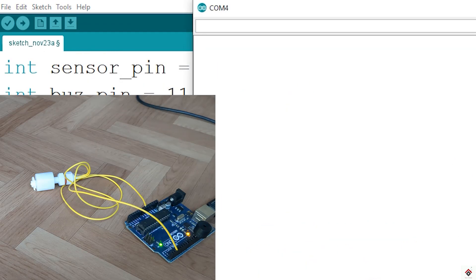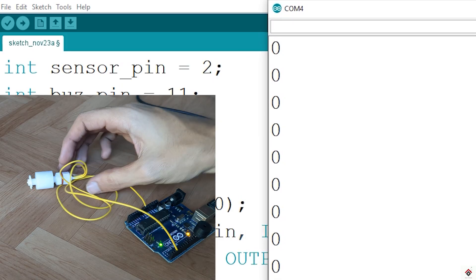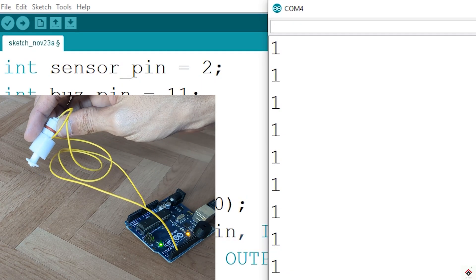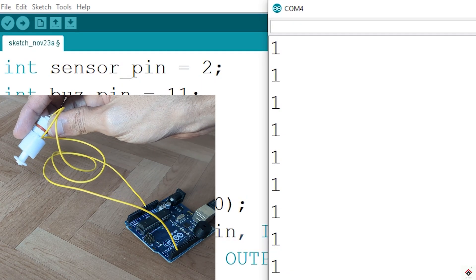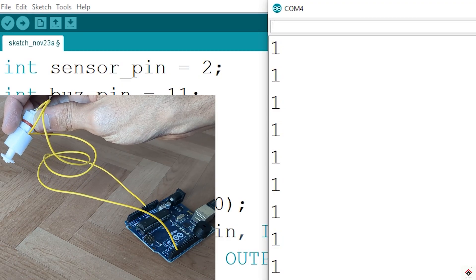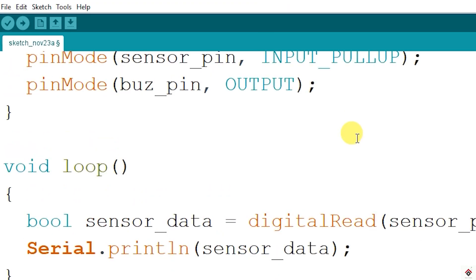I'll open the serial monitor. So my sensor float is at the bottom—we are getting 0. If I take it up, it's changing to 1. Zero and 1, which is expected. So moving further...